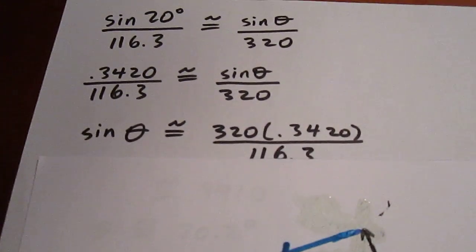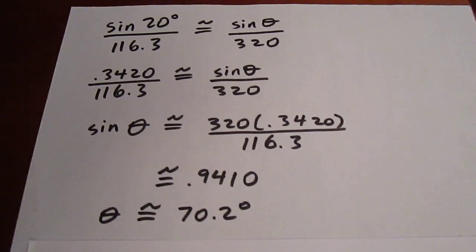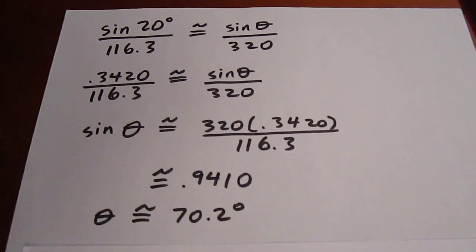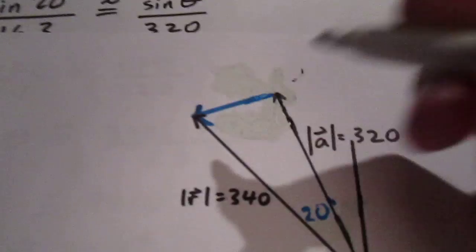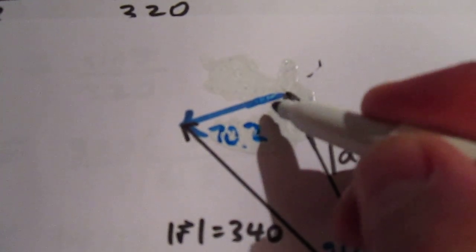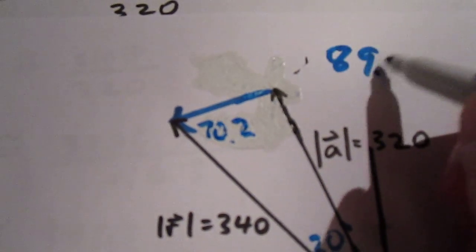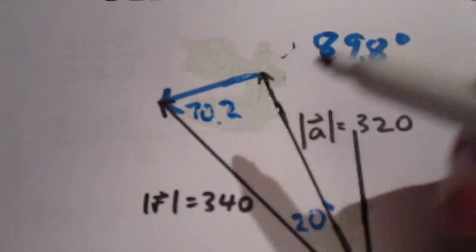So using the sine law, we get that the middle angle is approximately equal to 70.2 degrees. So we put 70.2 degrees in here, which means that this bigger angle must be 89.8 degrees due to the 180 rule.